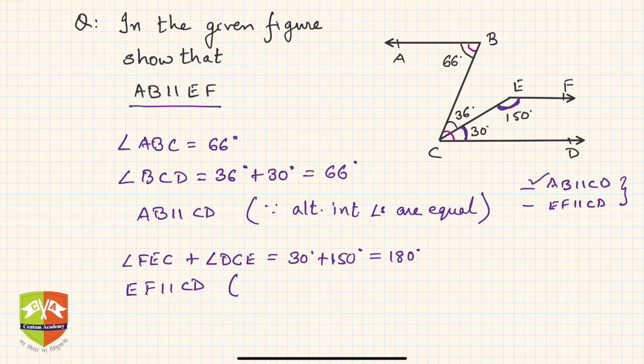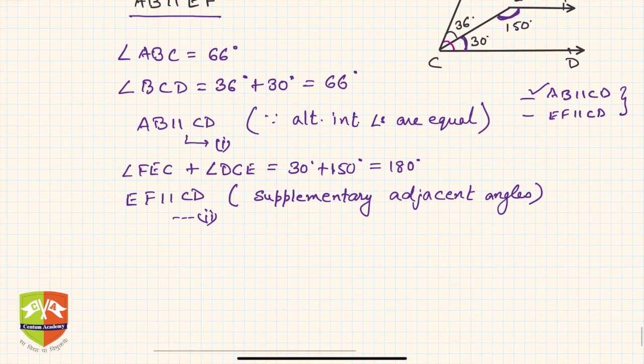So from statement one and statement two: AB is parallel to CD and EF is parallel to CD, so hence AB is parallel to EF.